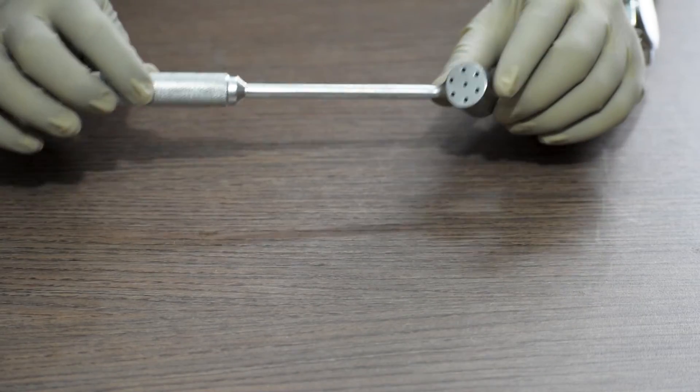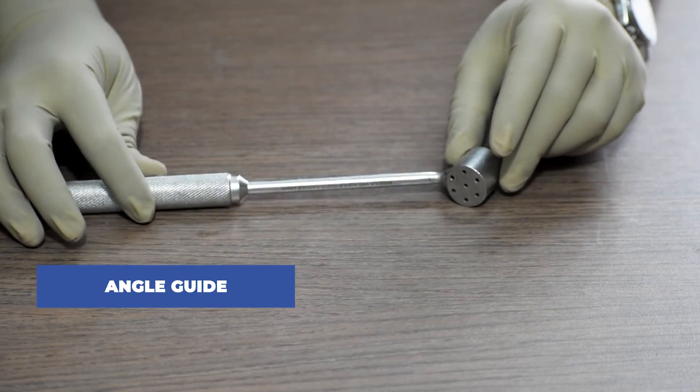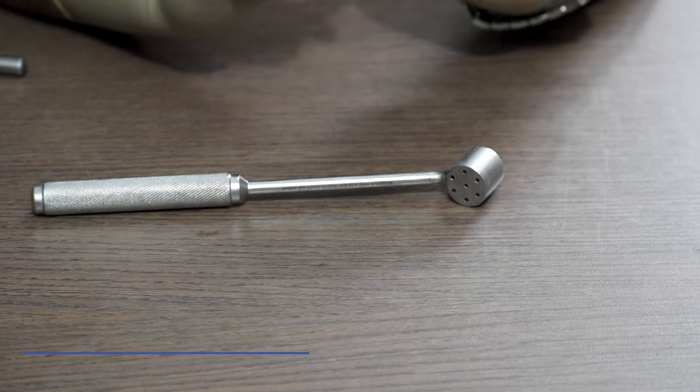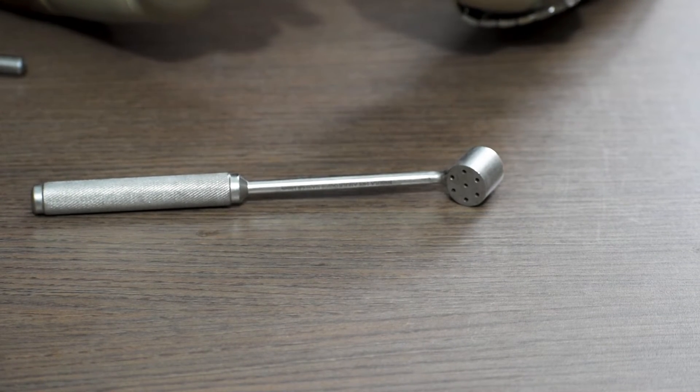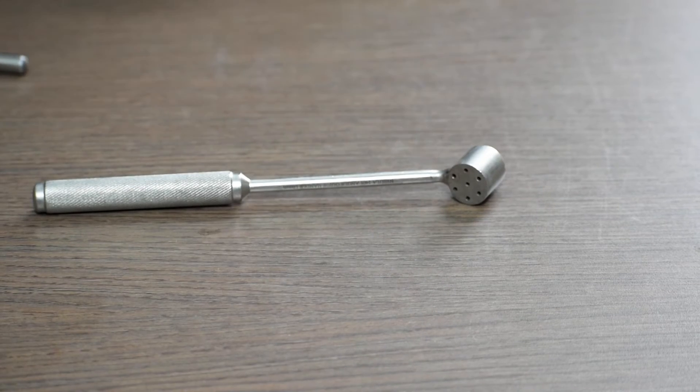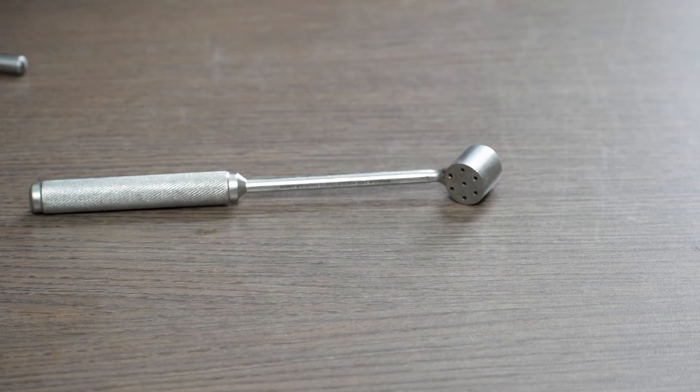Now, let us understand the use of this angle guide. This is only used when we require to fix this cannulated cancellous screw, 6.5mm, in the hip region or the neck femur.